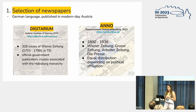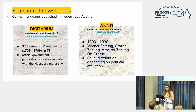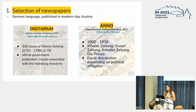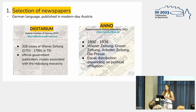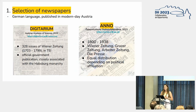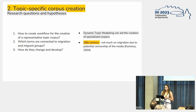In this talk I'm mostly focusing on my experiments done on the DIGITARIUM — more specifically on 328 issues of the Wiener Zeitung, which is the only daily newspaper in German available from the 18th century. It is an official government publication closely associated with the Habsburg monarchy, which can also give us some insights into which topics we might find in this collection.